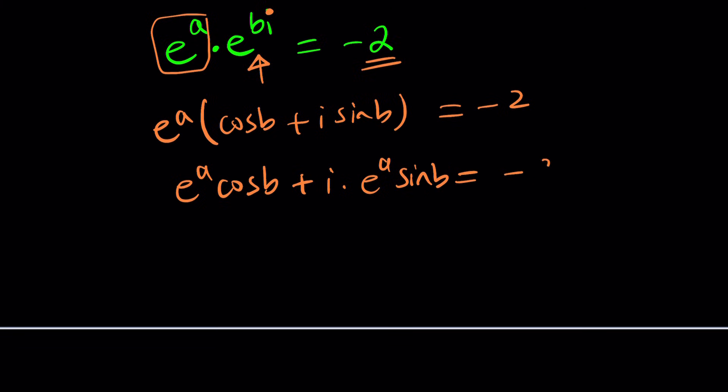So let's go ahead and distribute e to the a cosine b plus i times e to the a sine b is equal to negative 2. Now, we have complex numbers on both sides, and what do you know if two complex numbers are equal? The real parts have to be equal, first of all, and then the imaginary parts come into the picture.